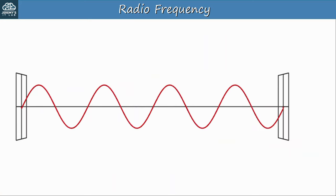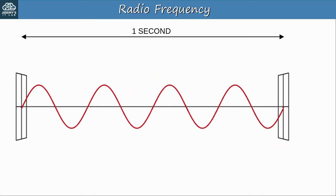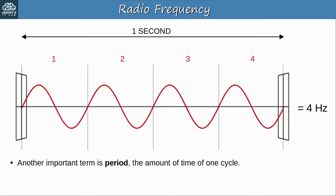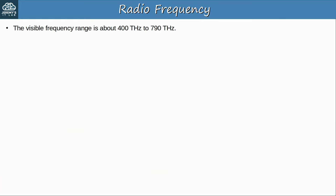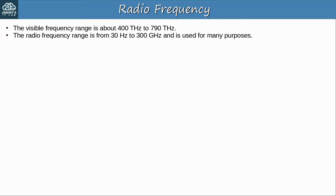For example, if a wave completes four cycles in one second, its frequency is 4 hertz. Another important term is period — the amount of time of one cycle. So if the frequency is 4 hertz, the period is 0.25 seconds because four cycles occur in one second. The visible frequency range is from about 400 terahertz to 790 terahertz, but the range we are concerned with — radio frequency — is from about 30 hertz to 300 gigahertz, and it's used for many purposes.